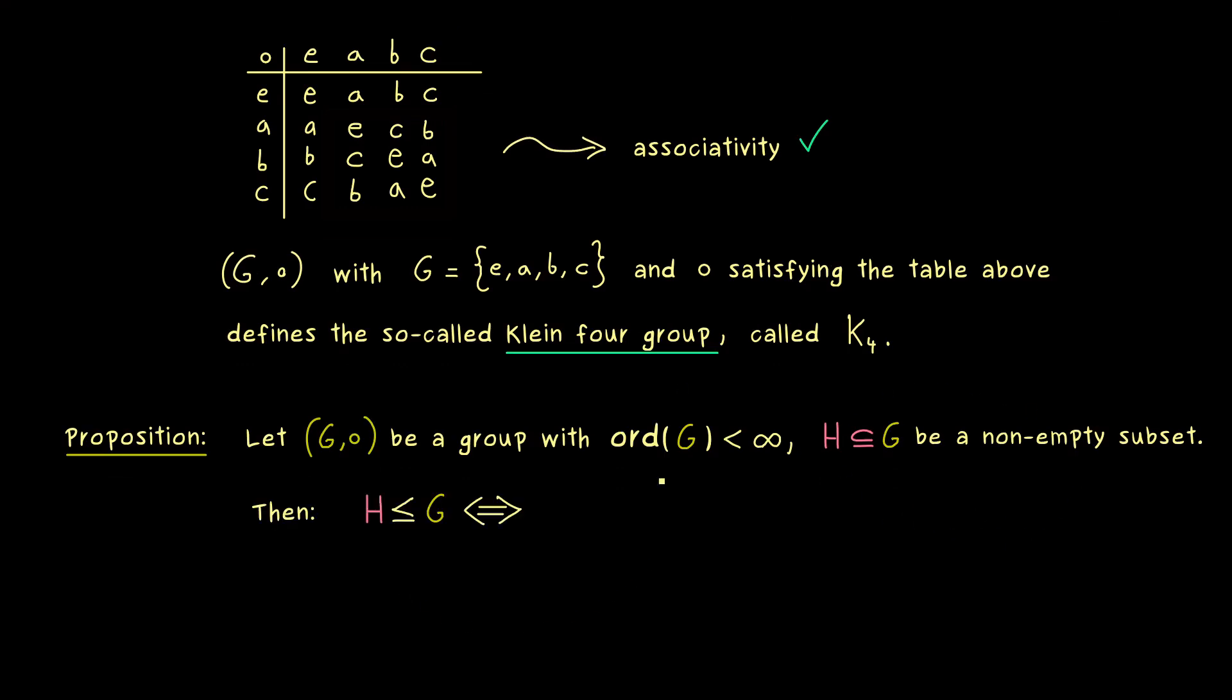Therefore, we still assume that H is a non-empty subset in G. Then we still have the equivalence from above. H is a subgroup in G if and only if one condition is satisfied. Indeed, the first condition is already sufficient for having a subgroup.